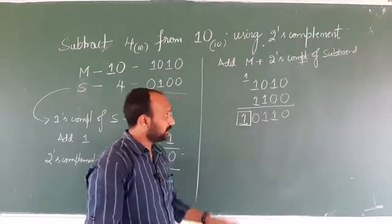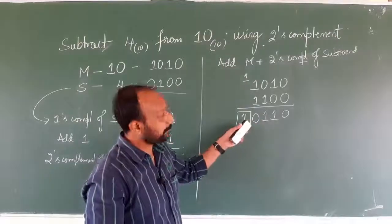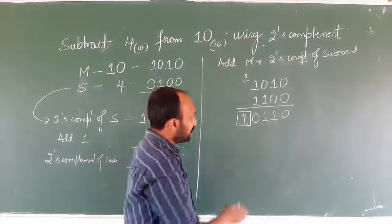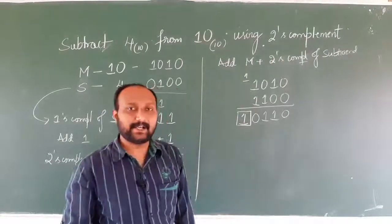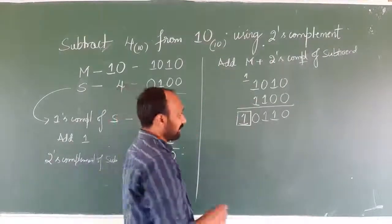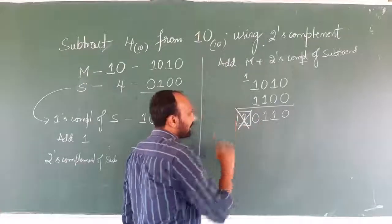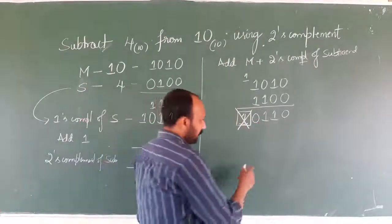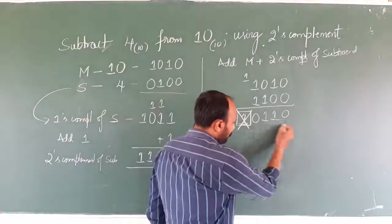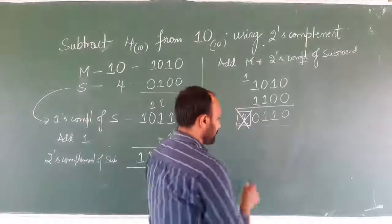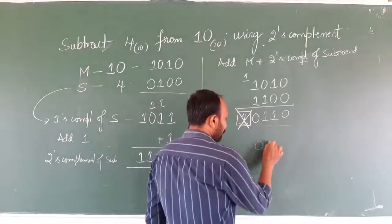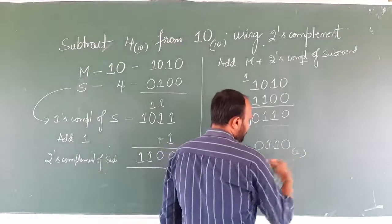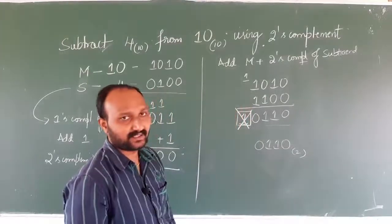In two's complement subtraction method, in case you get an extra bit, that extra bit will be discarded. You will be considering only the remaining part, which is 0110 (base 2), as the answer.